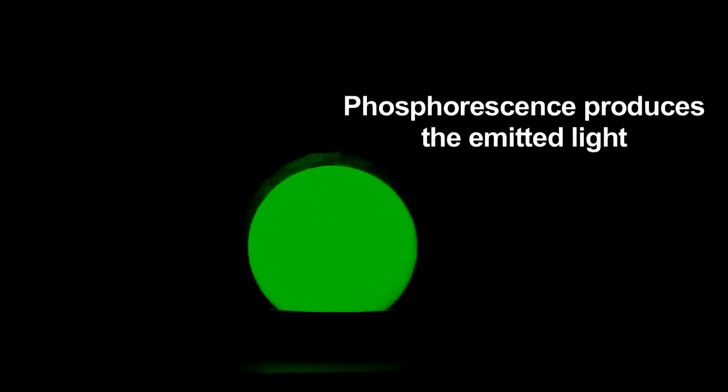The light provides energy to electrons in the coating, promoting them to higher energy levels. Once the light is off, these electrons slowly lose their added energy and return to their lower energy ground states. The energy lost is given off as light.